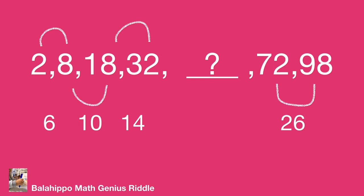Can I find the rule from the number differences? The number difference between 32 and the missing number, then the missing number and 72.